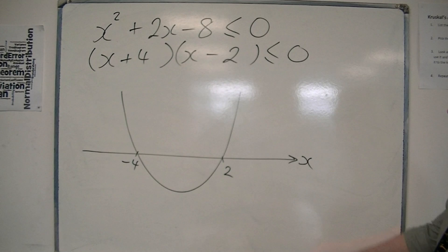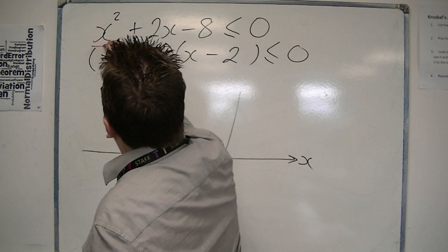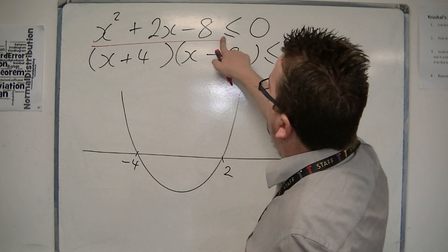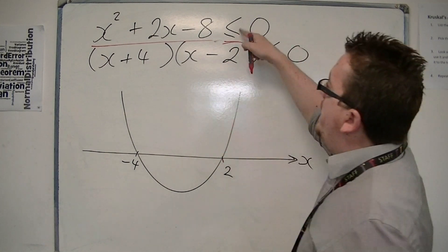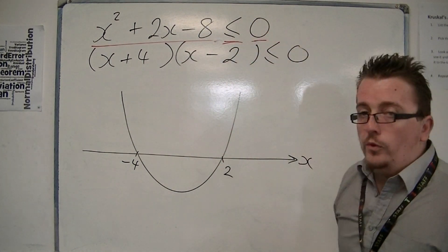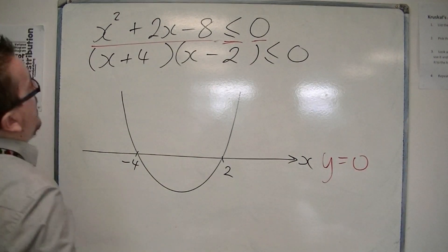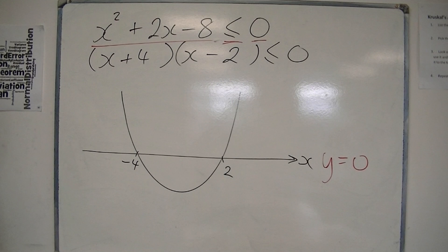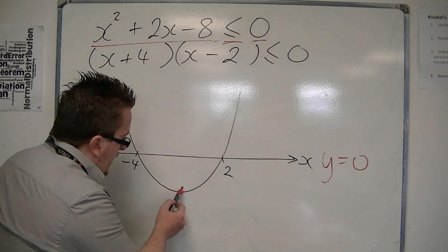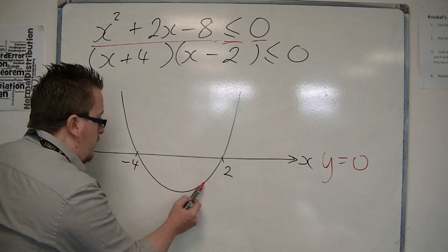So what we're asking here is where is the parabola, this time below or equal to y equals 0. This is the line y equals 0, remember, the x-axis. Where is it below the x-axis? And it's below it here. This is the bit where it's below.